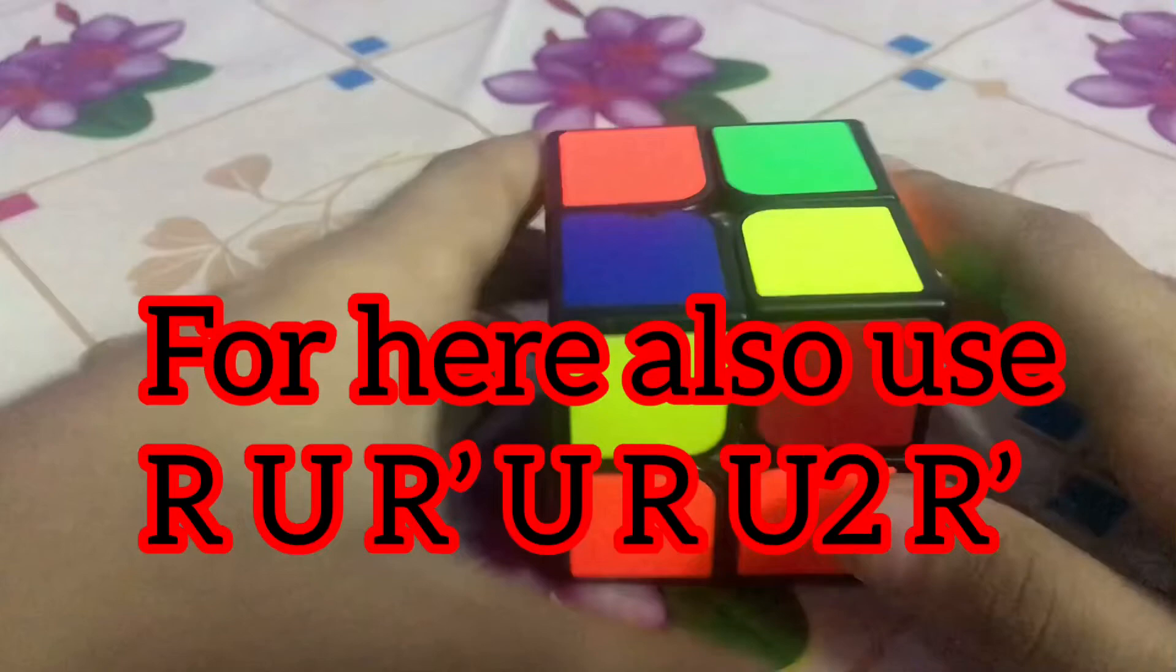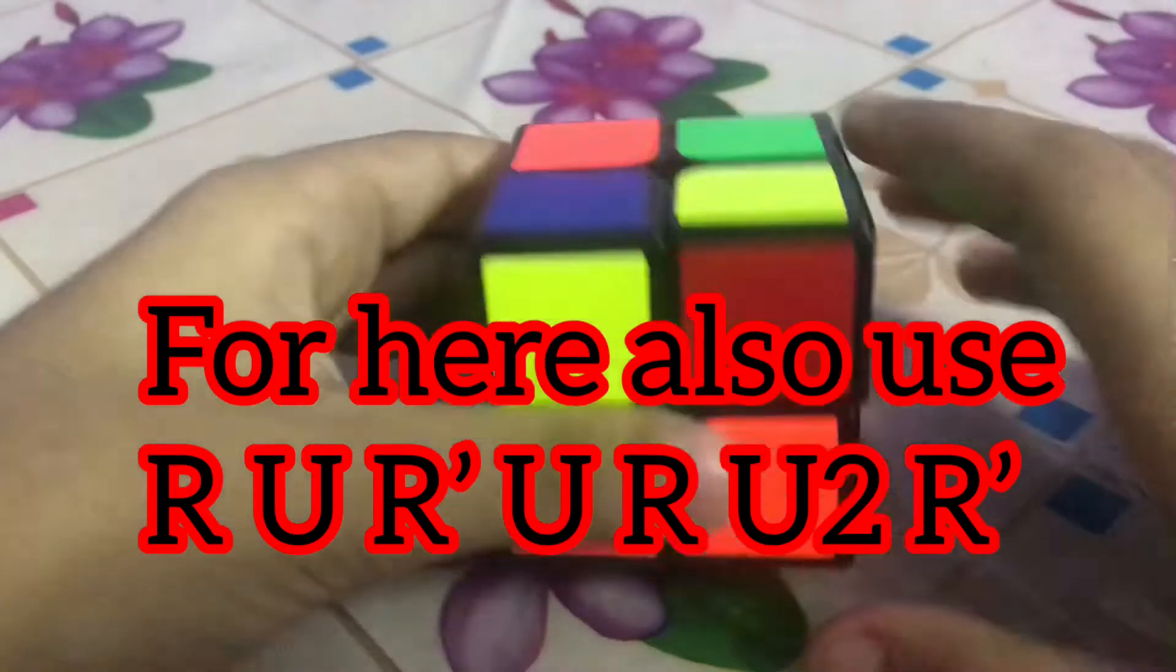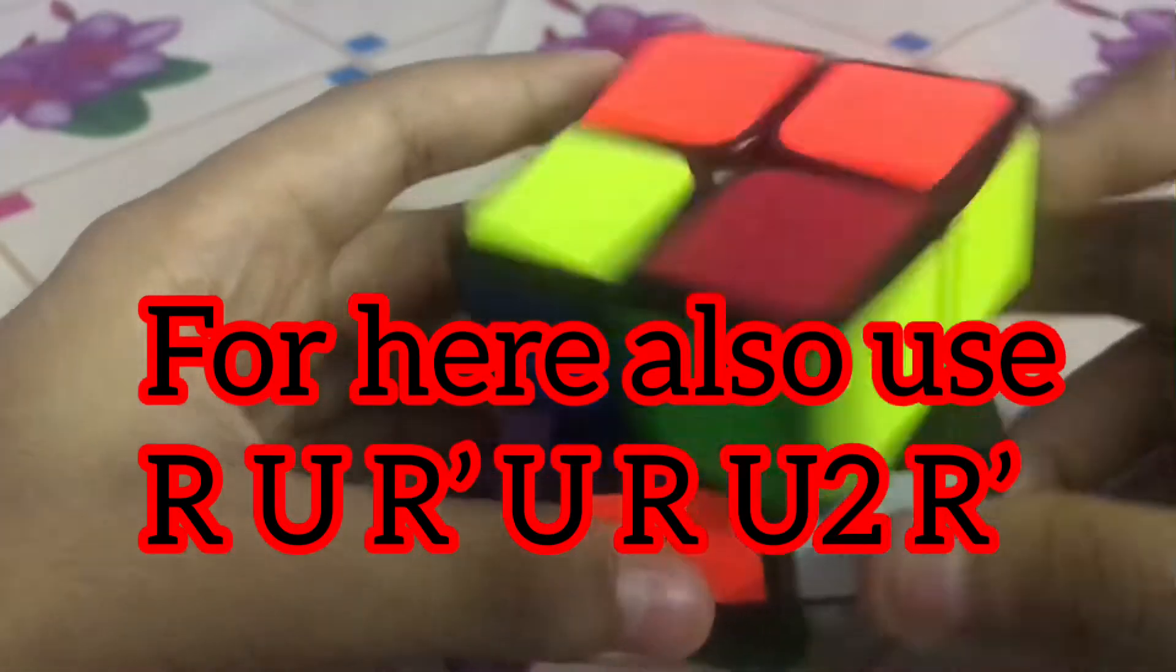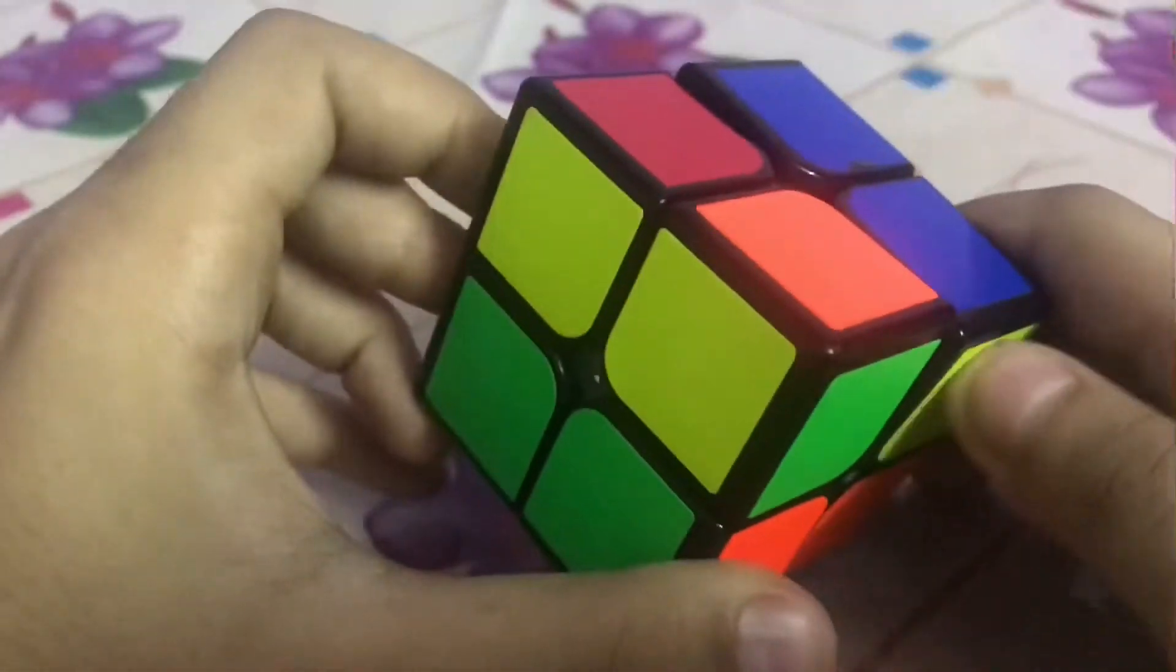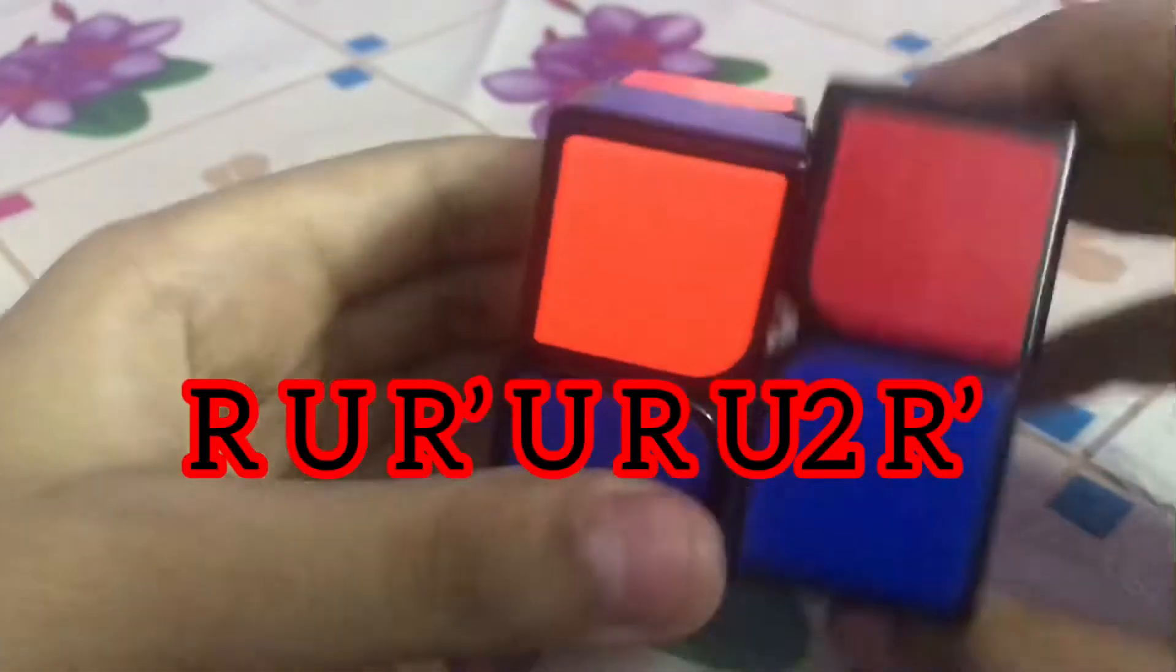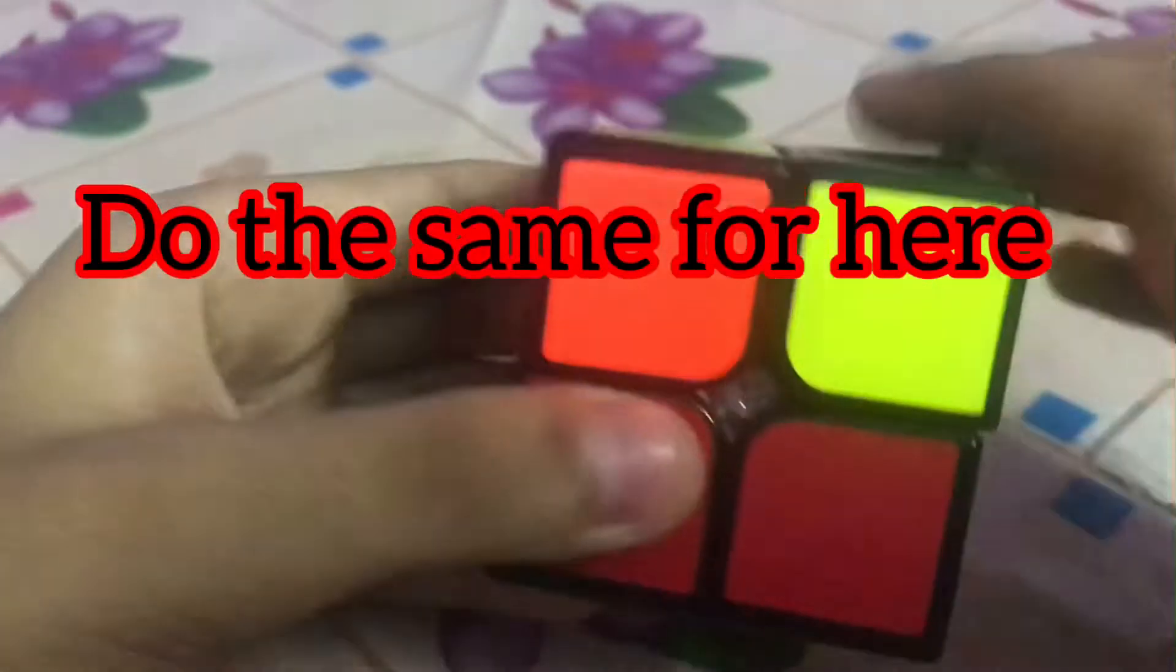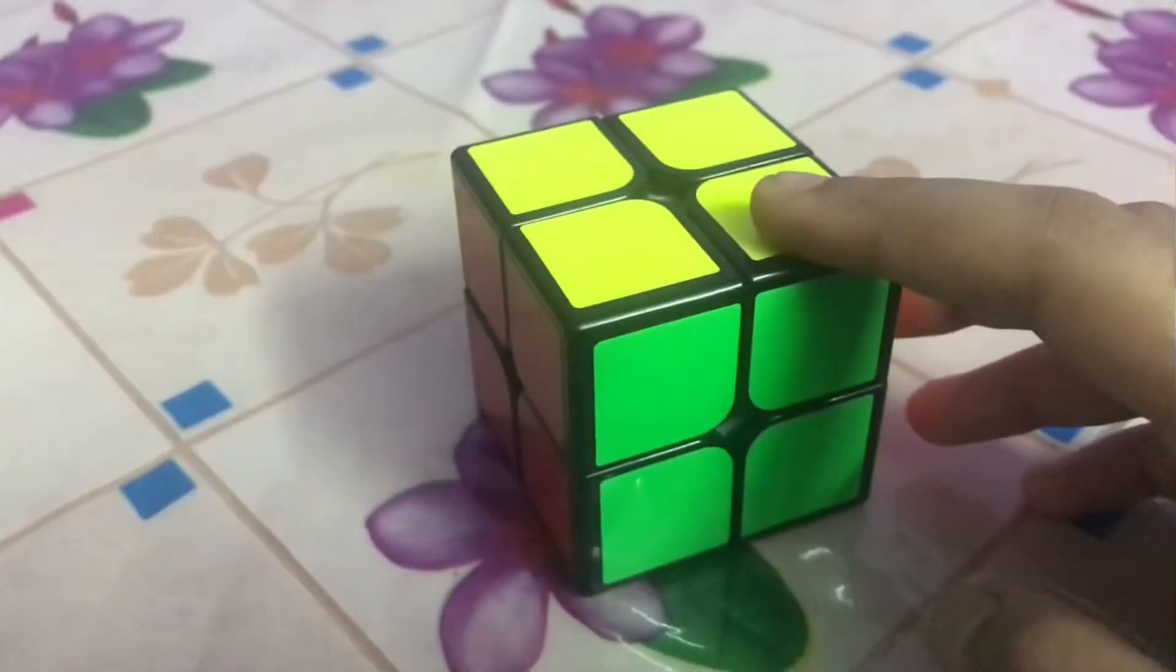Our next situation is the opposite of the last step. In this situation, our Rubik's cube is fully solved.